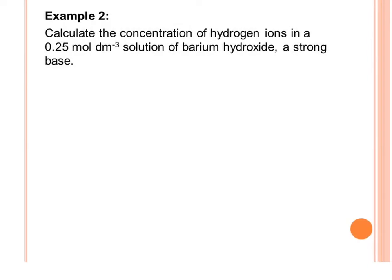In Example 2, we have barium hydroxide, Ba(OH)₂. This is a strong base that will completely dissociate into its ions: Ba²⁺ and 2 OH⁻ ions.